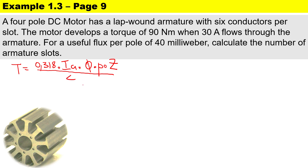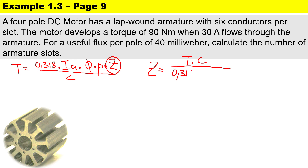To solve for the number of slots, we first need to derive z, the total number of armature conductors. We manipulate the equation: z equals torque times the number of parallel paths, divided by 0.318, times the armature current, times the flux per pole, times the number of pole pairs.